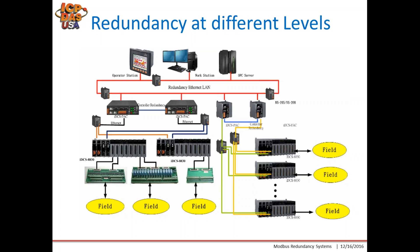Our IDCS system includes redundant power supplies and the ability to use redundant controls. If you have redundant field devices, you can use our IDCS remote IO modules — shown as IDCS 8830 in the picture — where you can have redundant IO with two input modules connected to the same controller, or you can have separate controllers where you just have one IO slot module.